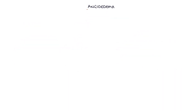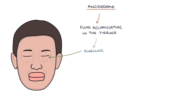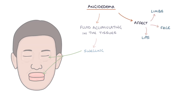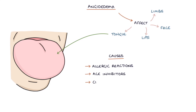Let's talk about angioedema. Angioedema refers to fluid accumulating in the tissues, which results in swelling. Angioedema can affect a number of areas, such as the limbs, the face and the lips. It can also affect the tongue, causing the tongue to swell up. The three top causes of angioedema to remember for your exams are allergic reactions, ACE inhibitors, and C1 esterase inhibitor deficiency, which is also called hereditary angioedema.